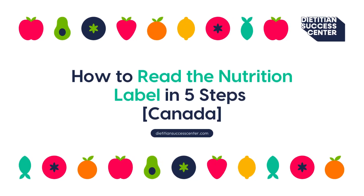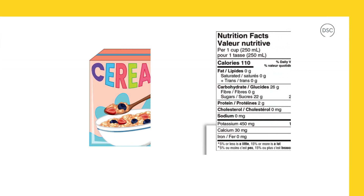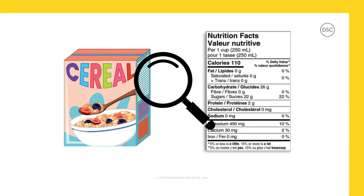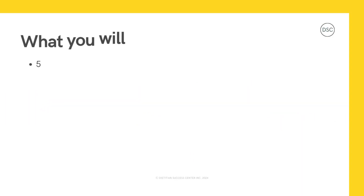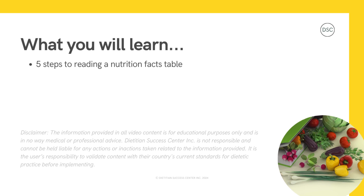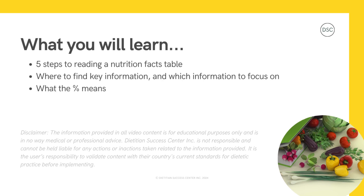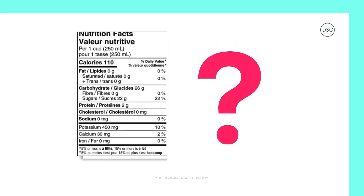How to read the nutrition facts label in five steps. Nutrition labels, and specifically the nutrition facts table, can help you compare packaged food and drink products and make the best choices for your nutrition needs. In this video we will cover the five steps to reading a nutrition facts table, including where to find key information, which information we want to focus on, and what the percentage means on the right side of the table.